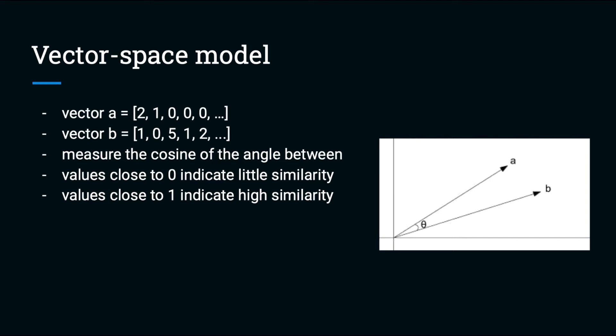Welcome back. A vector space model represents documents as vectors, as vectors of vocabulary indices. Then these vectors can be represented in a vector space.